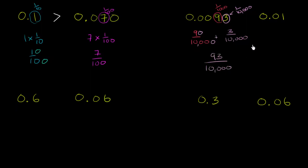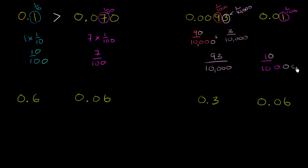Now let's think about 0.01. That 1 is in the hundredths place, so it literally represents one hundredth. To compare one hundredth to 93 ten-thousandths, we convert: multiplying numerator and denominator by 10 twice gives us 100 ten-thousandths, which is the same thing as one hundredth. So 100 ten-thousandths, or one hundredth, is definitely larger than 93 ten-thousandths. So 0.093 is less than 0.01.